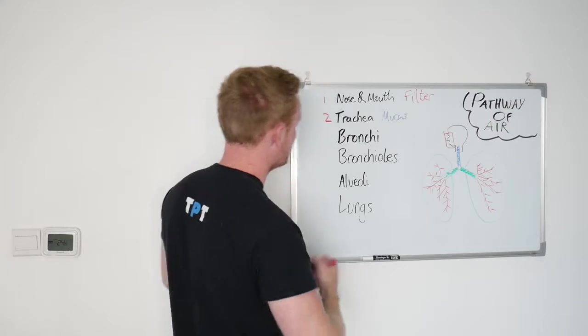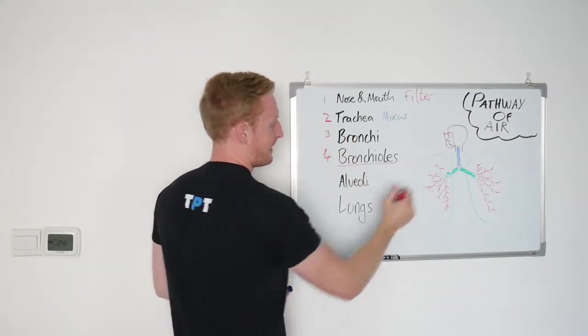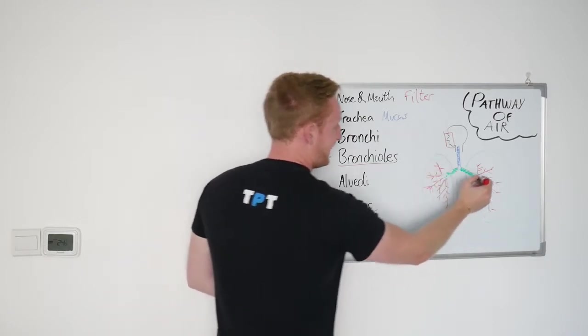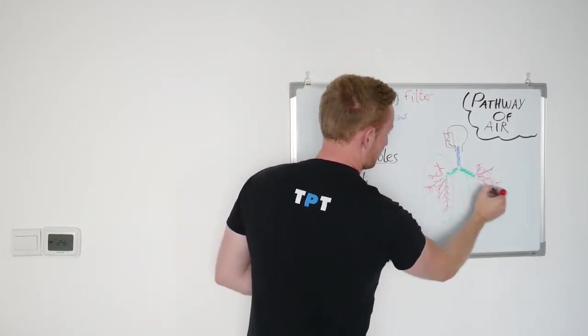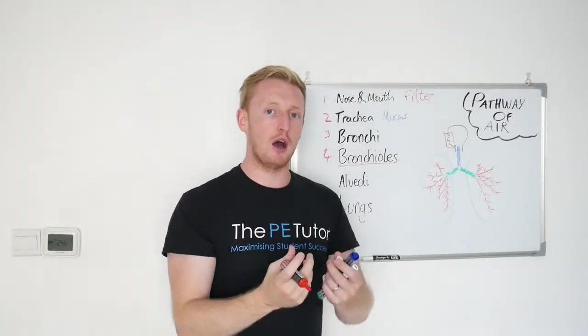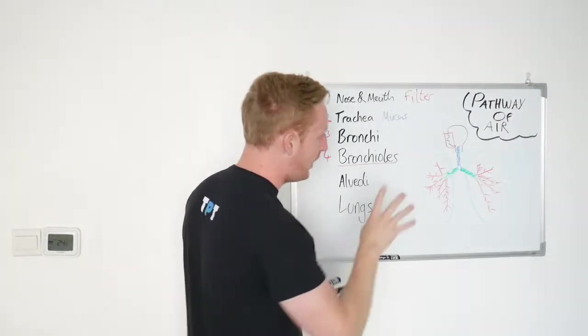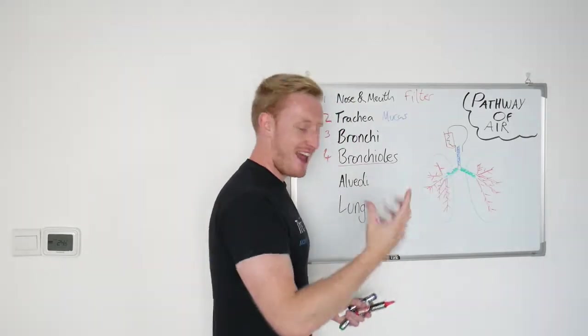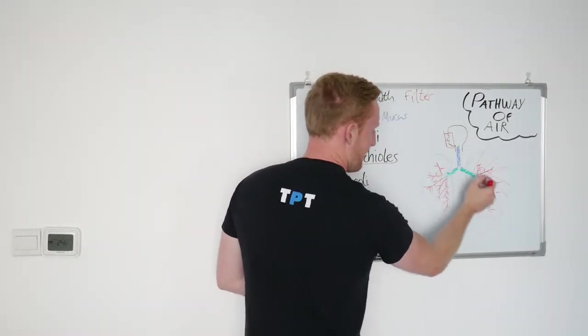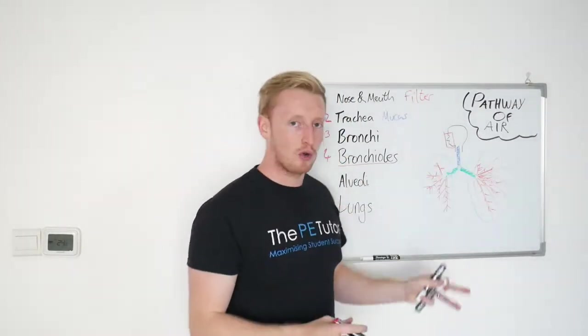Once air has made it through them, we are now in the bronchioles. These are smaller versions of the bronchi. This time they haven't got ringed walls of cartilage, so they're far smaller and they're far more fragile, with the purpose of dividing this pathway of air or this airflow all around the lungs. Their purpose is to disperse this airflow deep into the left and right hand lung.